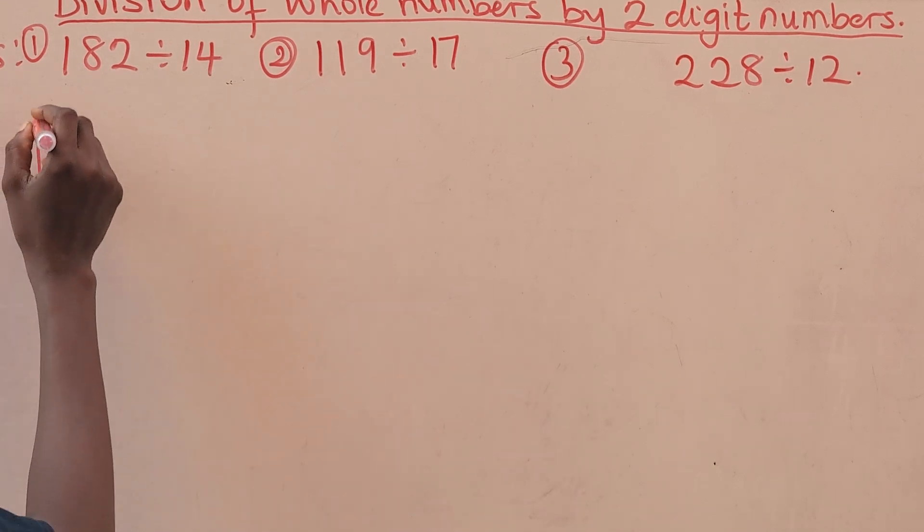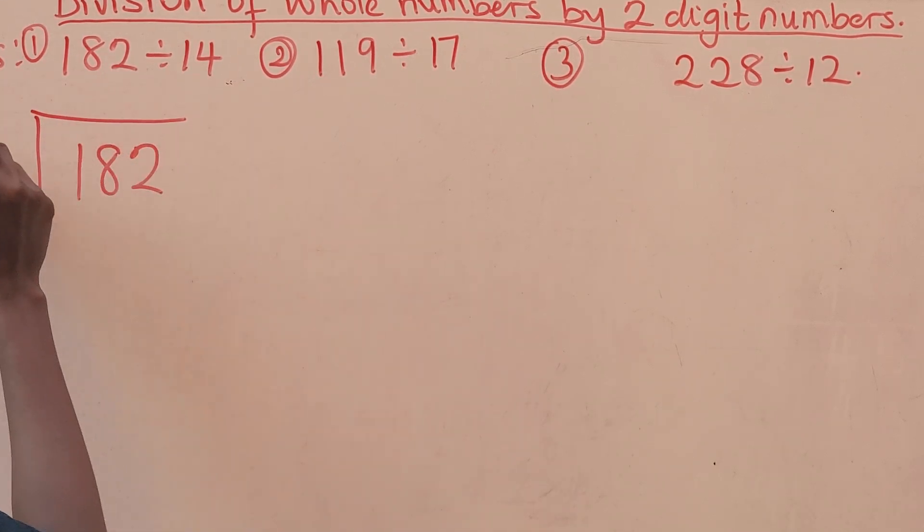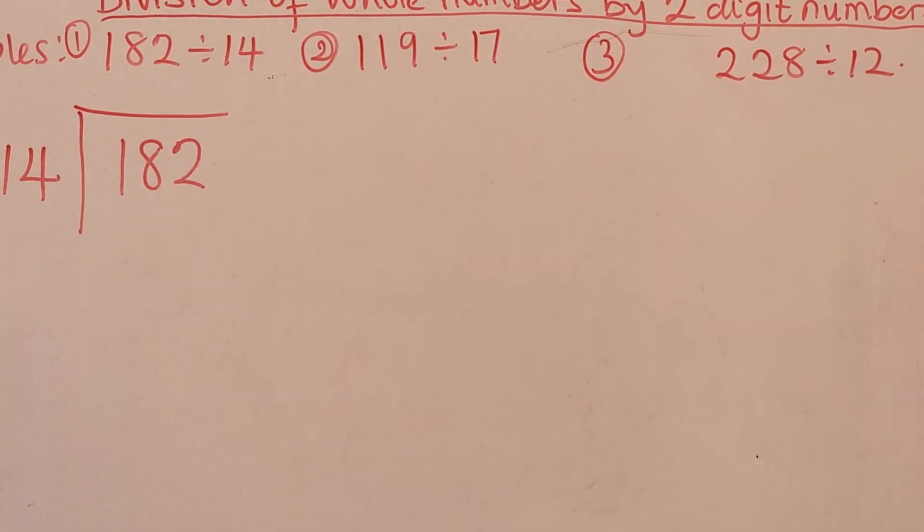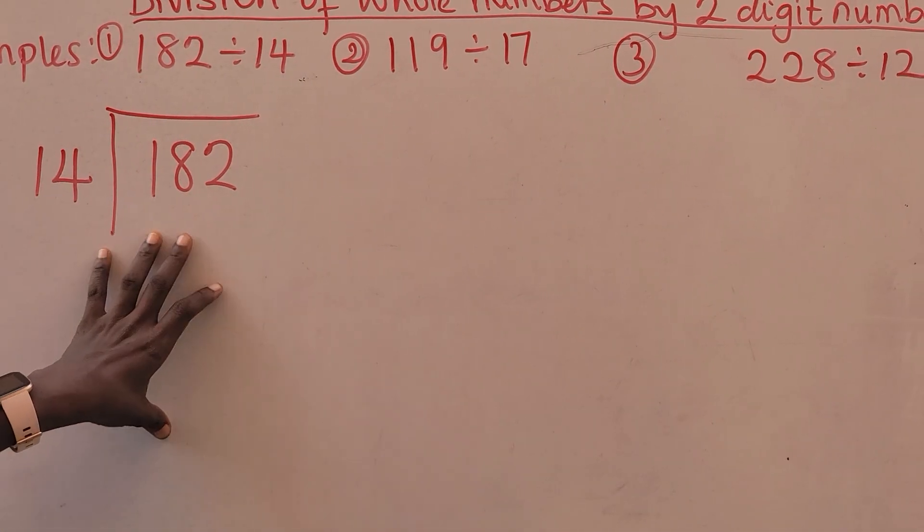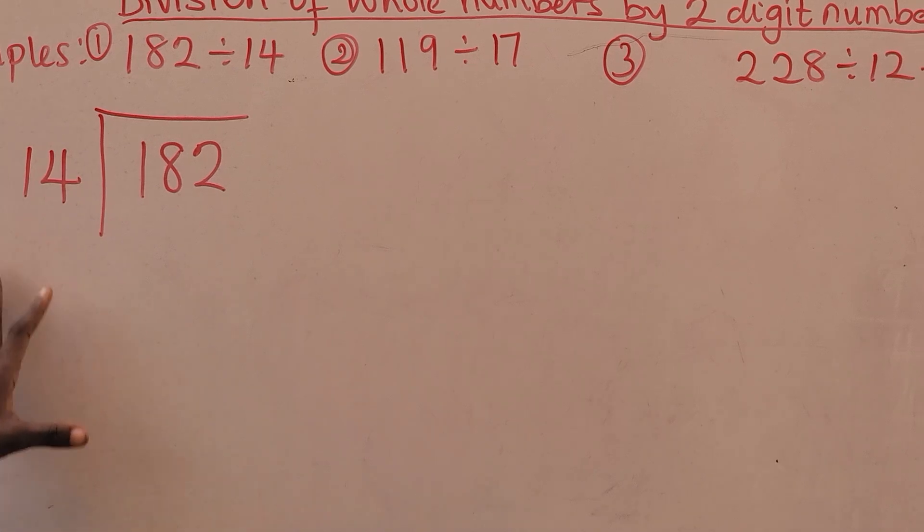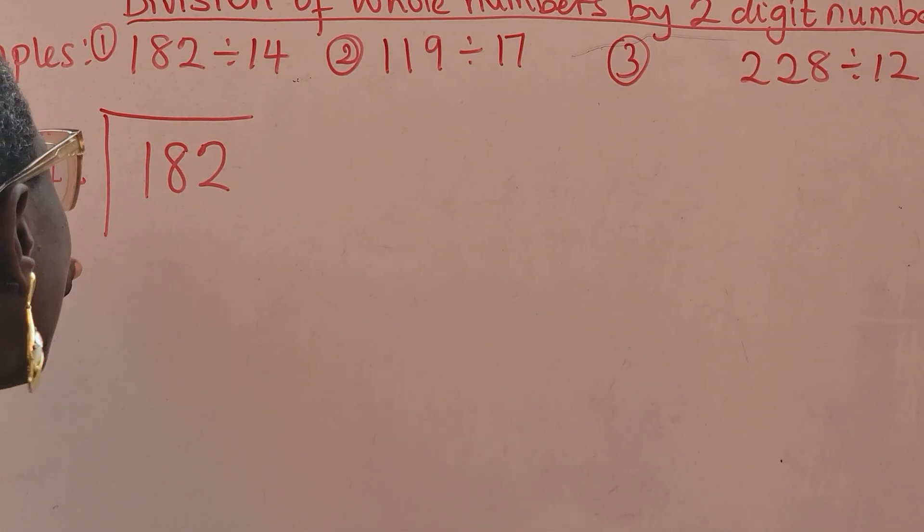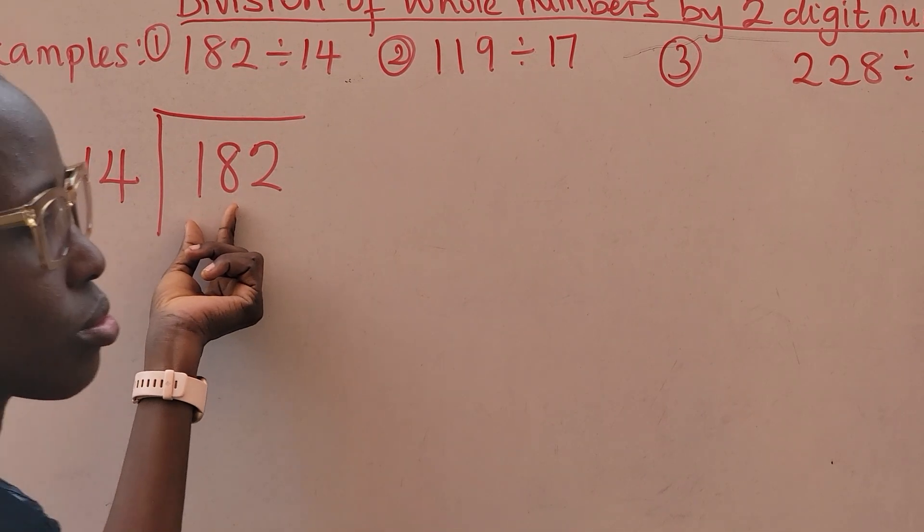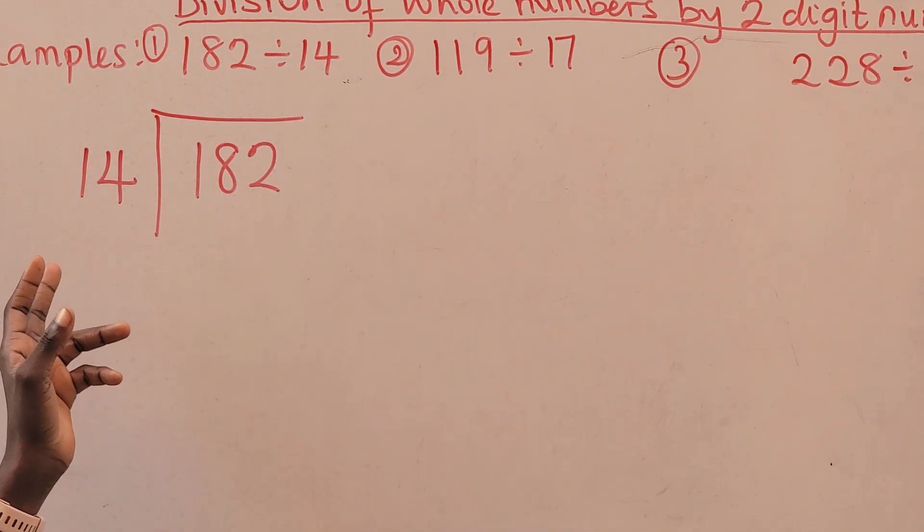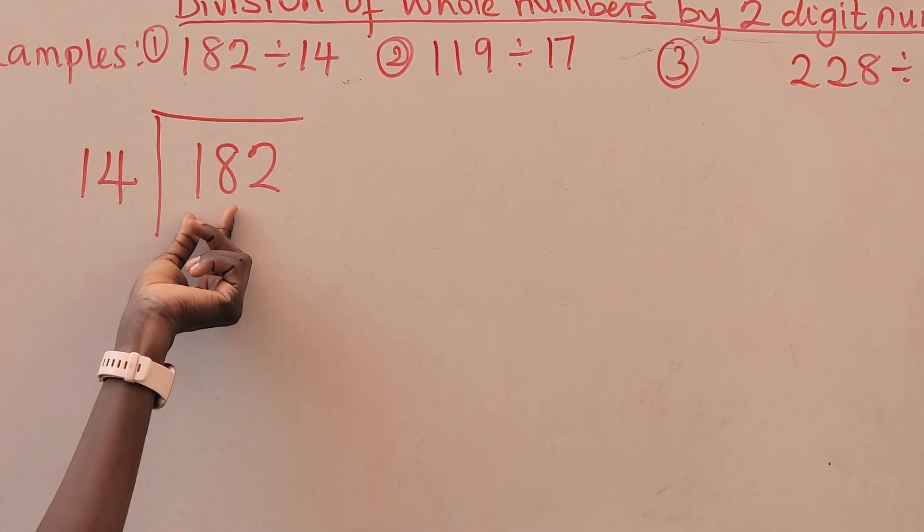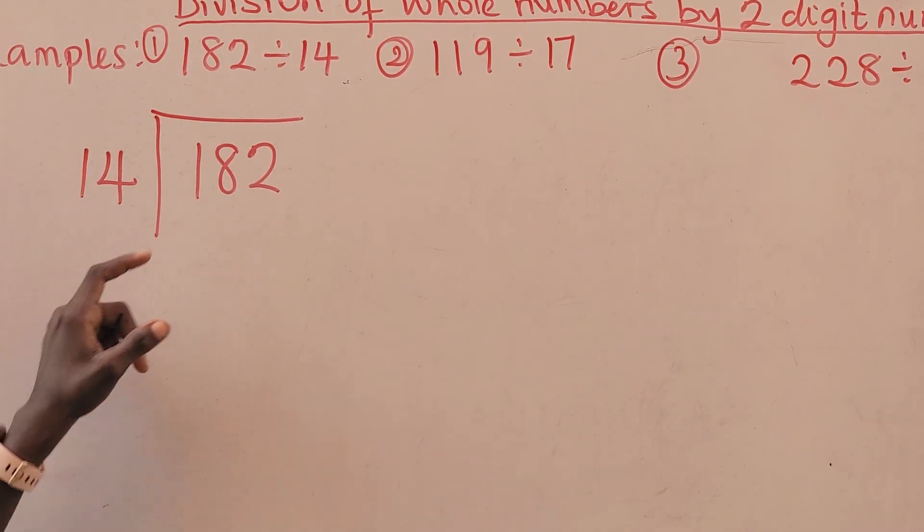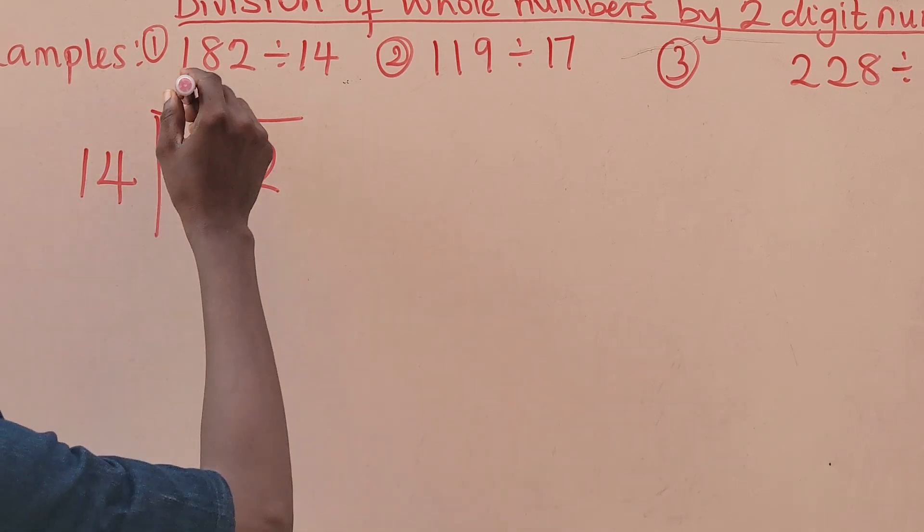So, let's go. We have 182 divided by 14. You need to know your multiplication table but if you don't know, you can quickly work with it. Now, we have 182 divided by 14. Can't start counting the 182 and start sharing it into 14. So, what I need to do is to pick my numbers. I'll pick the first two because one cannot possibly be working. So, I'll say 18 divided by 14. I know that is going to give me 1. 18 divided by 14, that will give me 1.